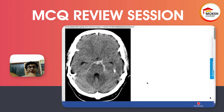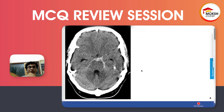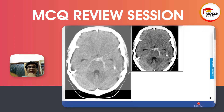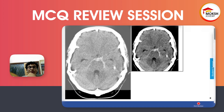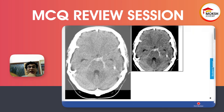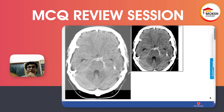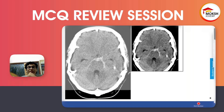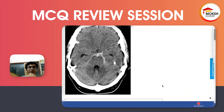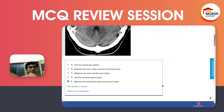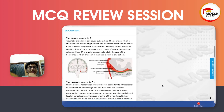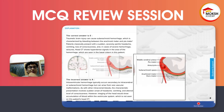Or if it were an extradural hematoma from the convex, there would be hyperintensity in the frontal and temporal areas. But it's not that. So, right here — subarachnoid hemorrhage.